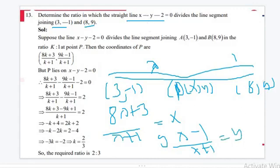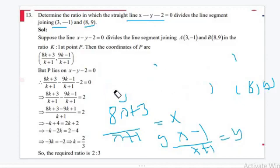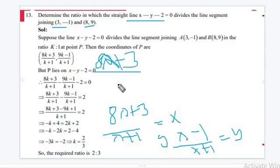After putting the value of x and y in this equation, we can write 8 lambda plus 3 divided by lambda plus 1 minus 9 lambda minus 1 divided by lambda plus 1 minus 2 equals 0.